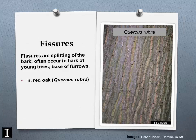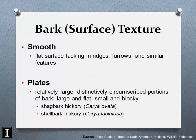Here's a classic example of fissures on northern red oak — a very fast-growing tree. That orange-pinkish area in the furrow is where the bark is separating, which is called a fissure. When you see fissures you know the tree is growing relatively fast. You see this frequently on northern red oak because it's one of the fastest-growing oaks.